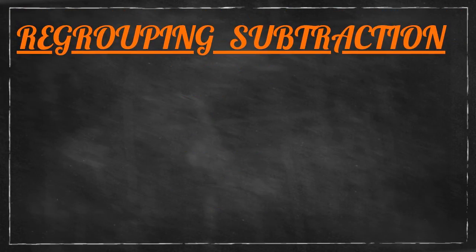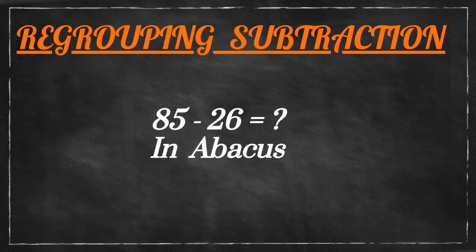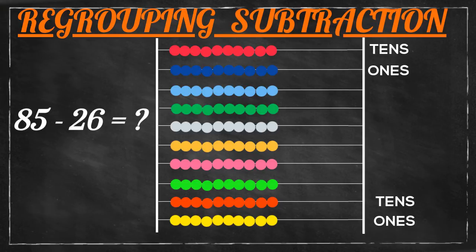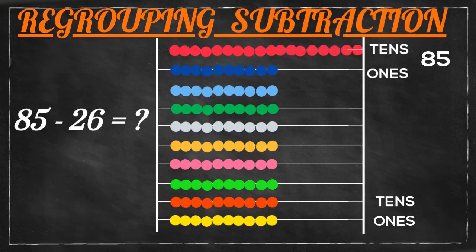For the last example, we will try subtraction with regrouping. Let's try to subtract 85 minus 26. For this subtraction we must consider the upper two rows as tens and ones, and the lower rows as another tens and ones. We have to project the bigger number, 85, on the top portion of the abacus, so eight goes in the tens place.